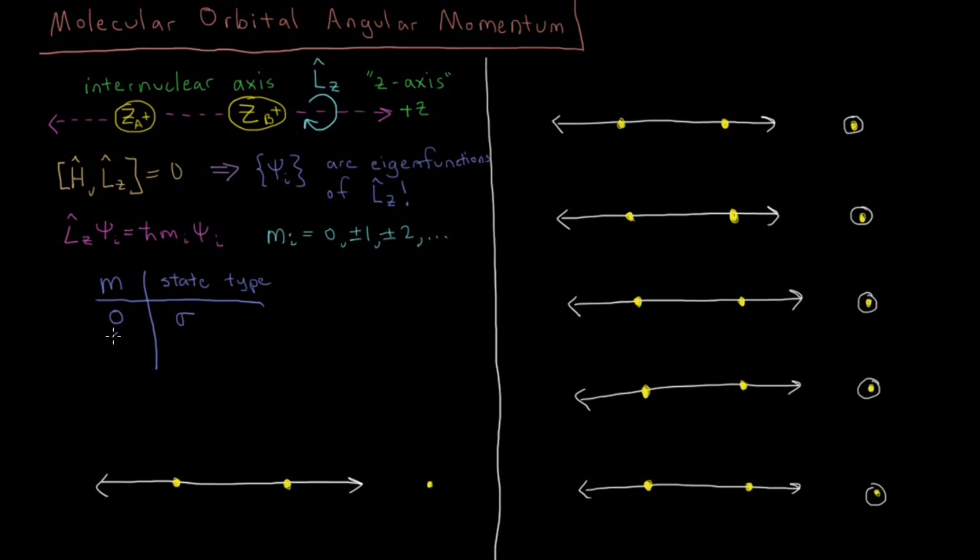If we have the absolute value of m equals 1, then that would be called a pi orbital, which also forms pi bonds and pi antibonds. We're very familiar with terms like sigma bond and pi bond from general chemistry and organic chemistry.